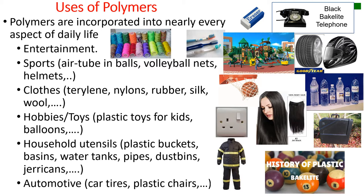Household utensils — when you look around in your homes, you will find that most of the materials contain a plastic or polymer part. Starting with the clothes that you are wearing, the buckets, plastic basins, water tanks, water pipes, plastic dust bins, gel cans, bottles that contain your body lotions — they are plastics. The covers of your computers, your telephones — plastic materials. The mosquito nets are nylon. The sockets for electricity are plastic. So polymers are widely used.